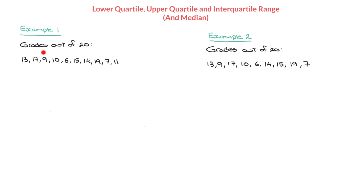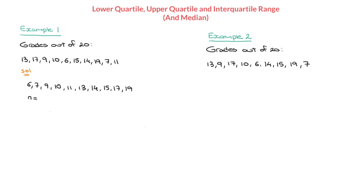In this first example, we're given some grades out of 20 — 13, 17, 9, 10, and so on — and we need to find the lower and upper quartile and the interquartile range for this list of grades. When looking for the quartiles, the first thing we need to do is rewrite our list of numbers in increasing order, from smallest to biggest. In doing so, it becomes 6, 7, 9, 10, 11, 13, 14, 15, 17, and 19. We then make a note of how many values we have — that's 10 values — and the number of values is called n, so n equals 10.